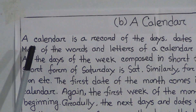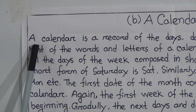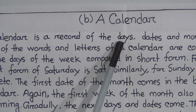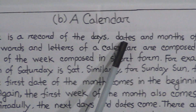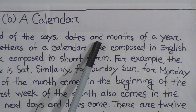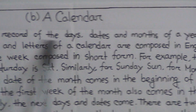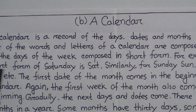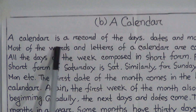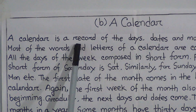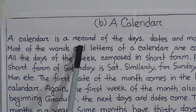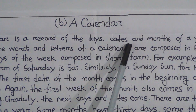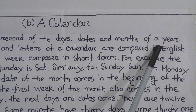A calendar is a record of the days, dates, and months of a year. Let me explain the meaning a little: a calendar is a written record of days, dates, months, and years.